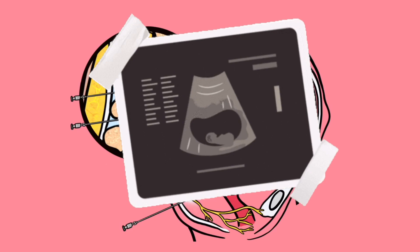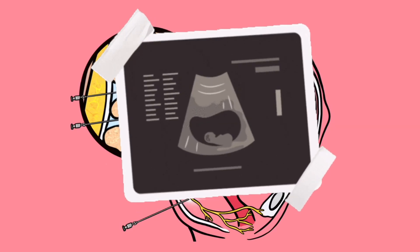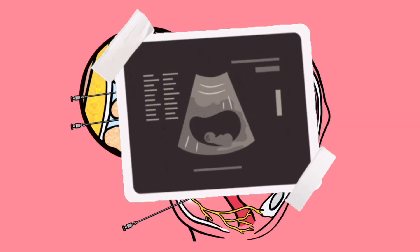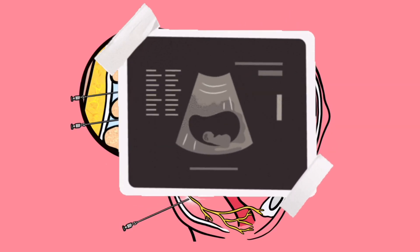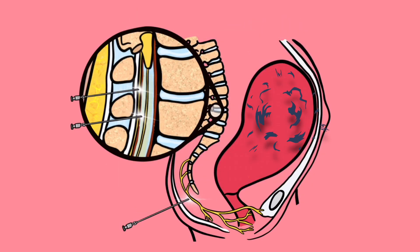We'll start by reviewing the physiology behind the pain experienced in labour. Labour can be defined as the active process of delivering a fetus, characterised by regular, painful contractions of the gravid uterus, which increase in frequency and intensity over time. These contractions help the cervix to dilate, allowing the fetus to move through the birth canal and ultimately be born.